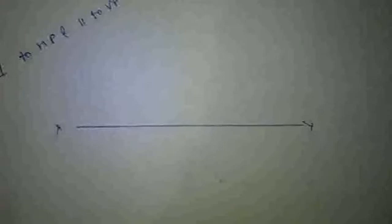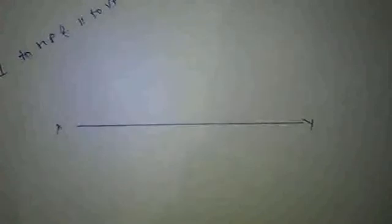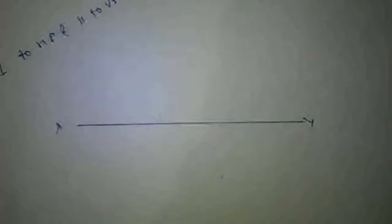In drawing the projections of a straight line, what matters is the true length — meaning in which view, front view or top view, we are seeing the full length of that object. For example, we have taken an example of a scale or pen.